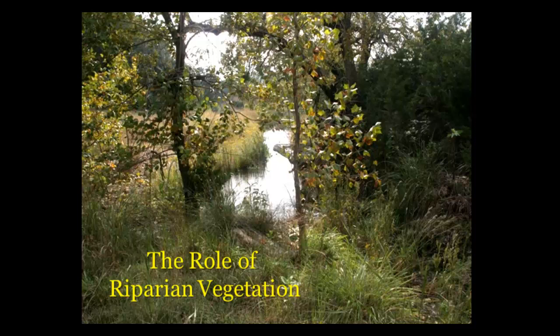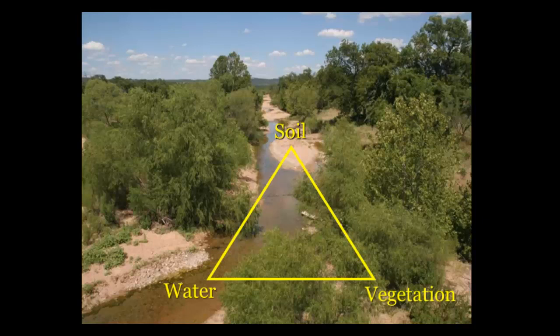We're going to continue talking about the role of riparian vegetation. You'll recall the triangle that dictates what goes on in a riparian area. Ryan did a good job talking about the hydrology and the soil sediment side — geomorphology. So we're going to close the triangle and talk about how vegetation interacts with both of these factors in the riparian area. This is the part landowners can sink their teeth into, because as landowners, you have control over the vegetation in your creek bottom. You don't really have direct control over the hydrology and some of the sediment dynamics.